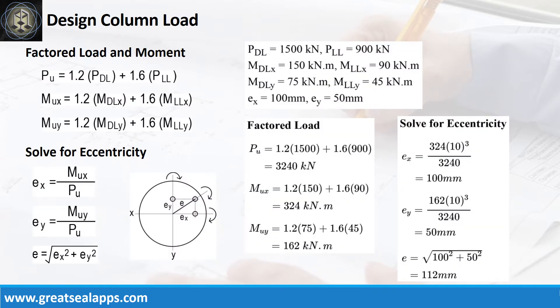Given axial dead load equals 1,500 kN and axial live load equals 900 kN, the factored axial load is 3,240 kN. At x-axis, given moment dead load equals 150 kNm and moment live load equals 90 kNm, the factored moment is 324 kNm with eccentricity of 100 mm. At y-axis, given moment dead load equals 75 kNm and moment live load equals 75 kNm, the factored moment is 162 kNm with eccentricity of 50 mm, for a combined eccentricity of 112 mm.